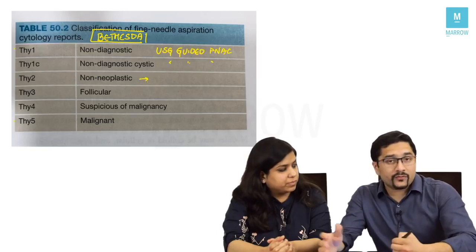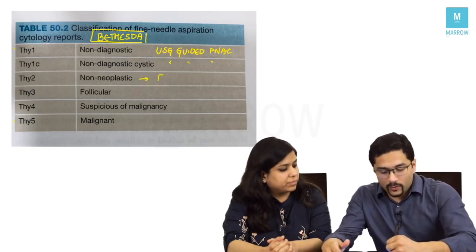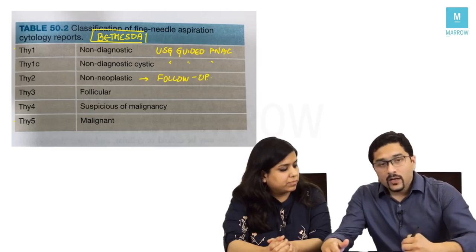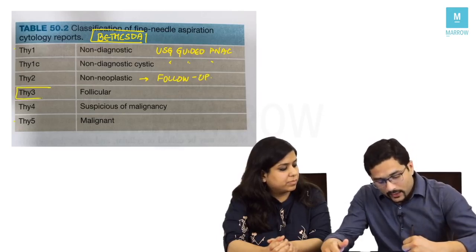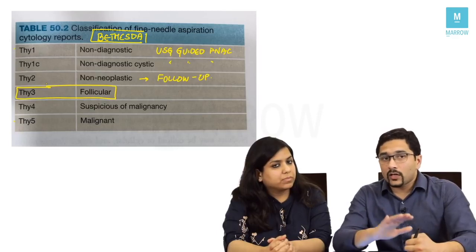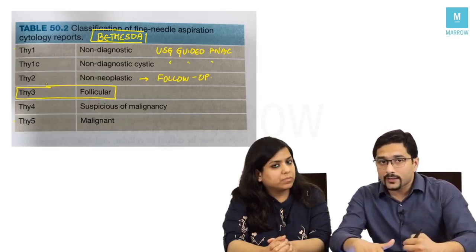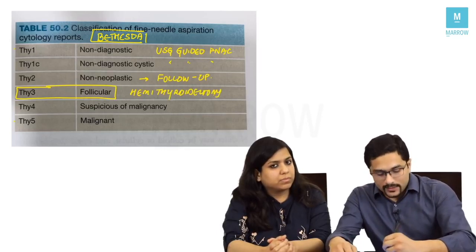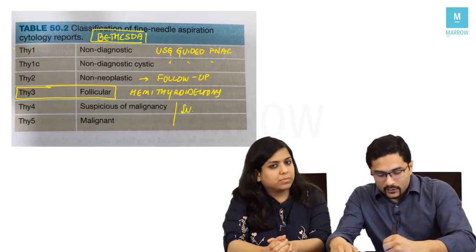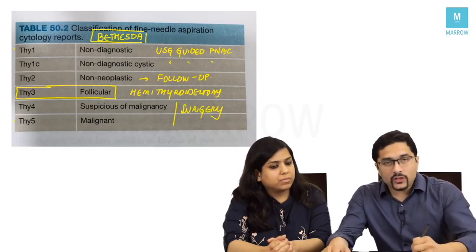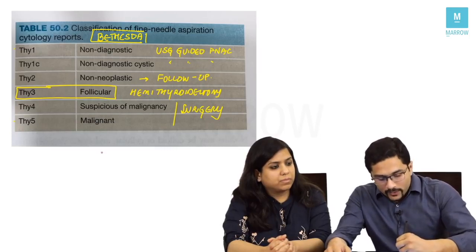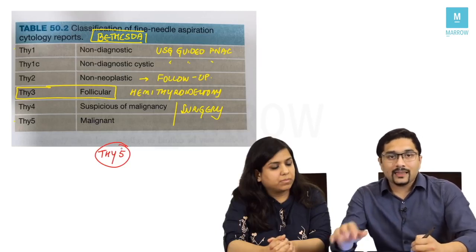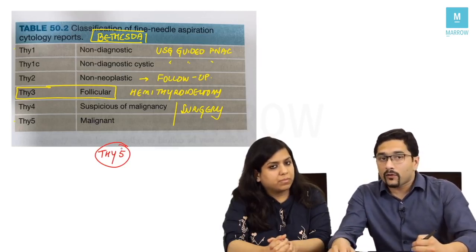THI2 is non-neoplastic — if it is non-neoplastic, we simply follow up the patient and don't need to do anything else. THI3 is follicular; as explained, we cannot differentiate adenoma versus carcinoma, so we do a hemithyroidectomy. THI4 is suspicious of malignancy and THI5 is malignancy — in both cases we proceed to surgery. In this patient, Dr. Illa reported it as a THI5 lesion, very certain of malignancy and leaning toward papillary carcinoma of thyroid.